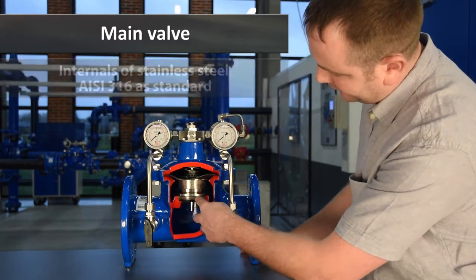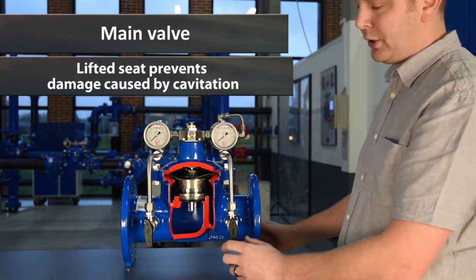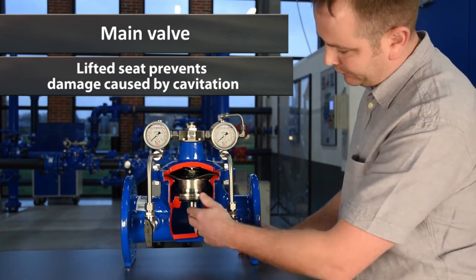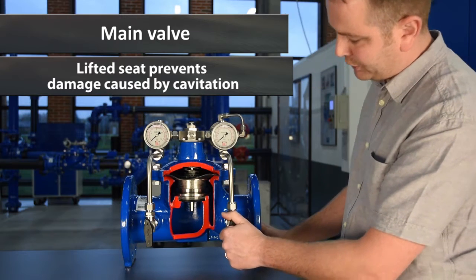Inside the main valve we have the lifted seat. The lifted seat offers a high KV value when the valve is fully open, and of course with the lifted seat you have reduced cavitation.